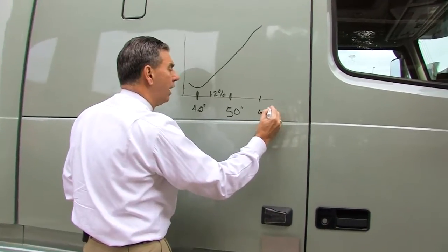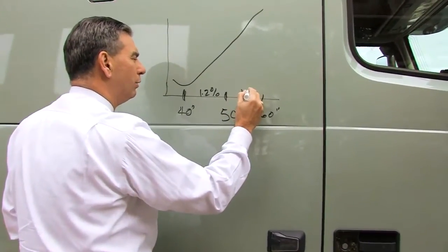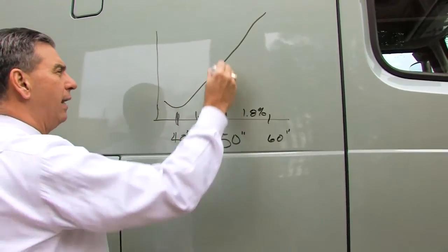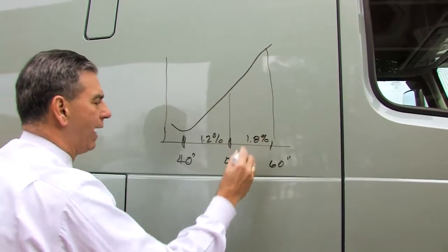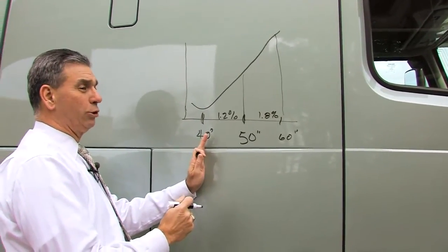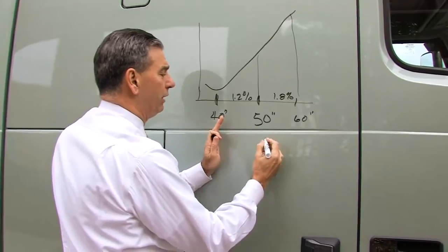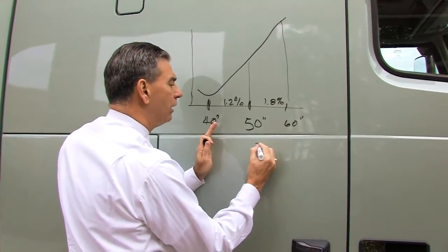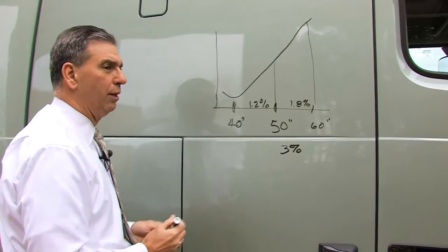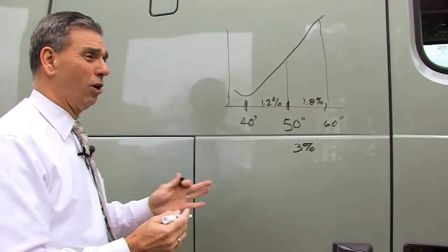And going another 10 inches, 60 inches will decrease it even further by about 1.8%. And it just so happens that these numbers are actually additive. So if you go from about a 40-inch trailer gap up to a 60-inch trailer gap, you can lose up to about 3% in fuel economy. Big numbers when you're talking about the cost of fuel now.